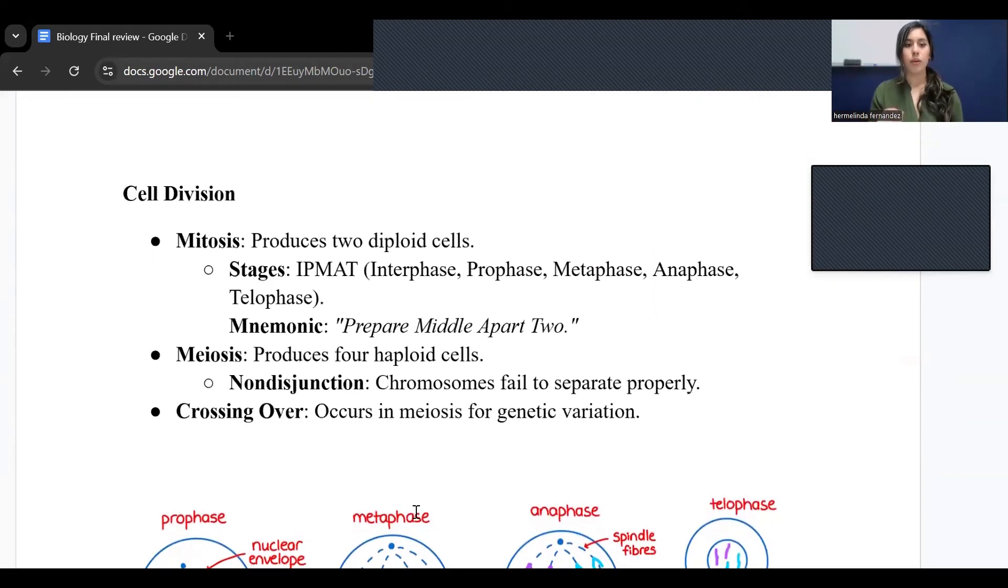Now cell division. With mitosis, it produces two diploid cells. The stages for mitosis is IPMAT. I will be making another video that explains a little bit more on what is going on in mitosis. So IPMAT: interphase, prophase, metaphase, anaphase, telophase, and then cytokinesis. Just think of 'I Prepare Middle Part Apart Too' or IPMAT.